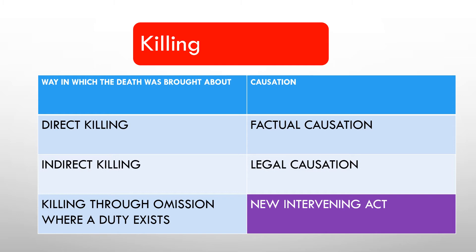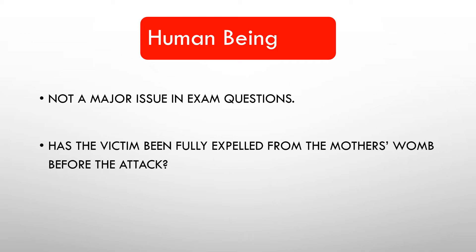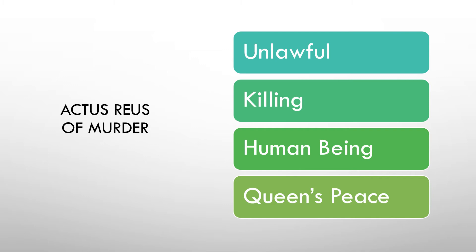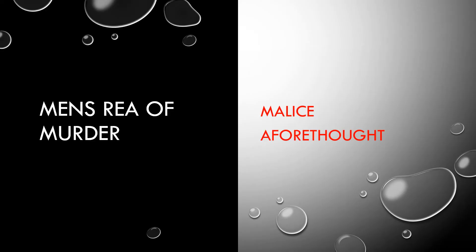'Human being' is not a major issue in exam questions — the victim will almost always be a human being. The test is whether the victim was fully expelled from the mother's womb before the attack. 'Queen's Peace' is similarly straightforward: was the killing during wartime? If not, it will be during the Queen's Peace.